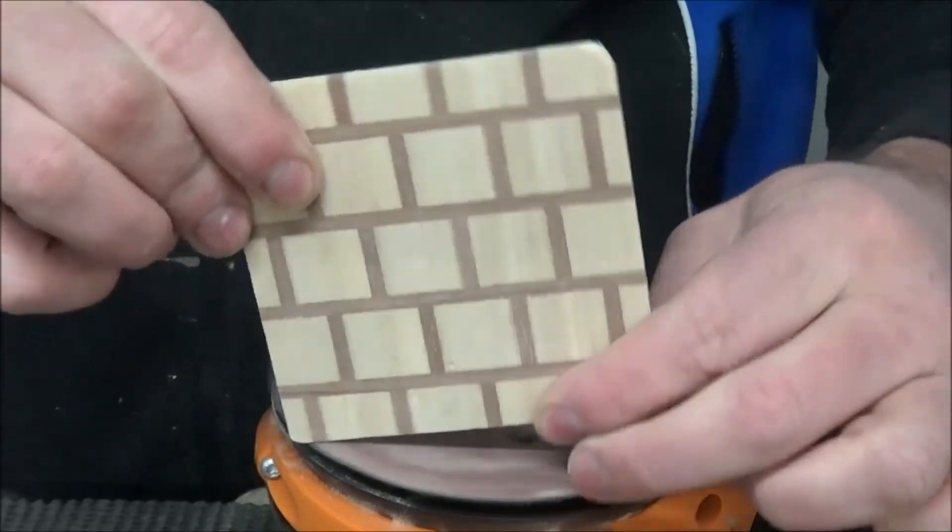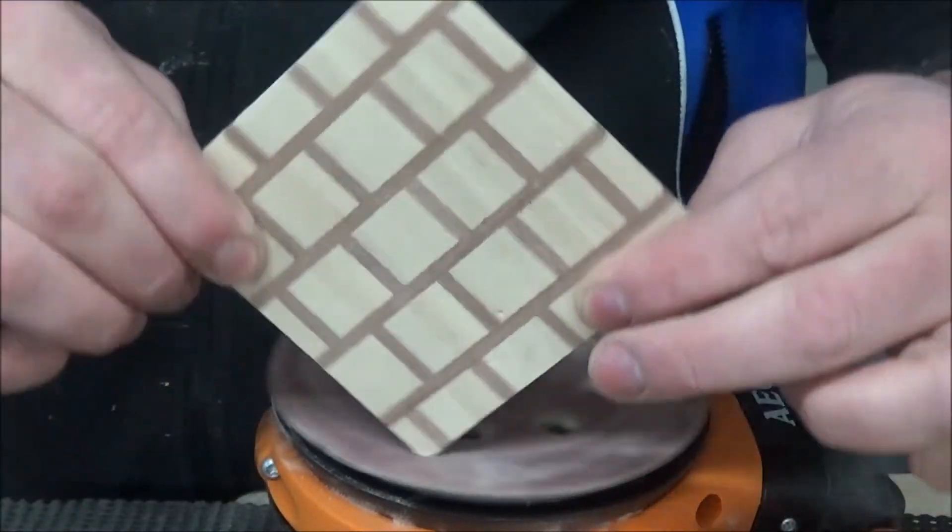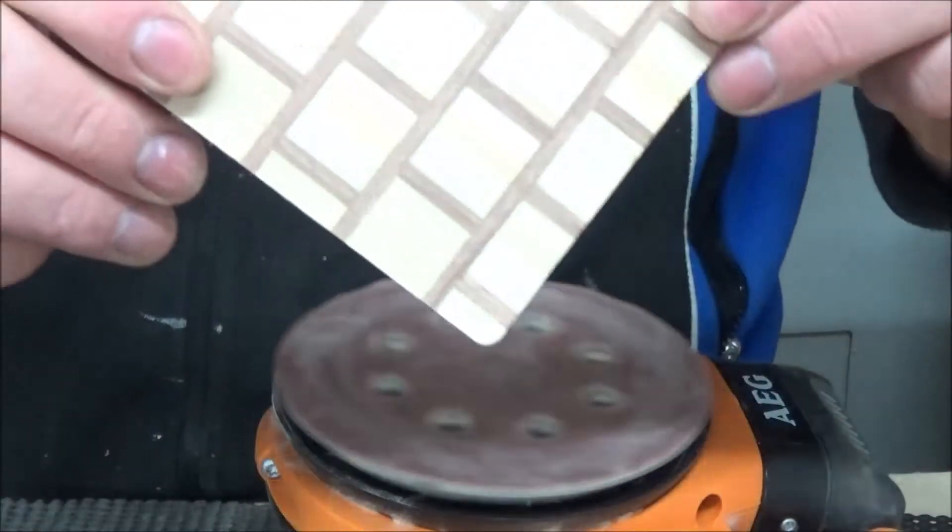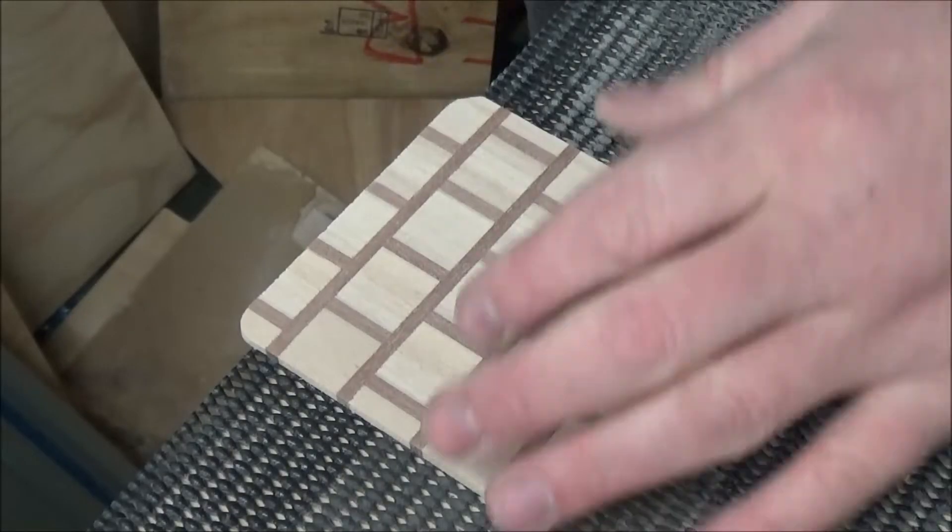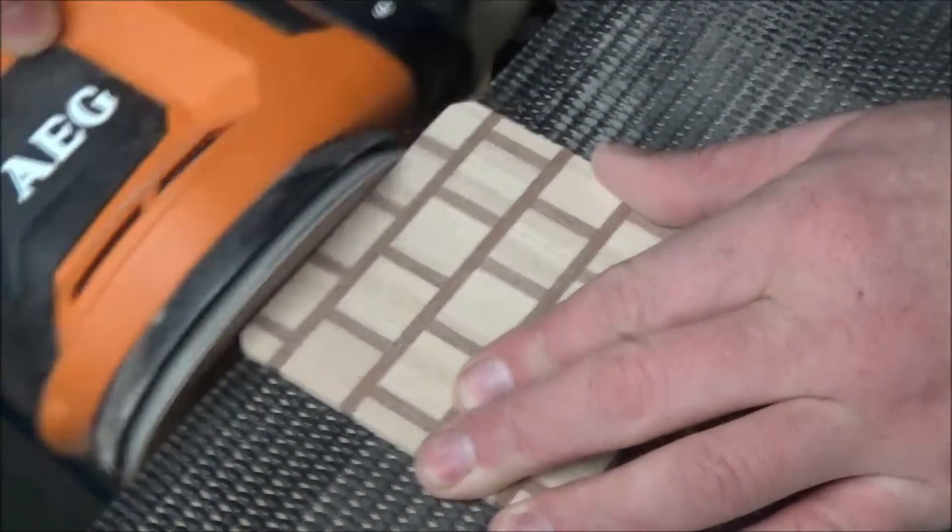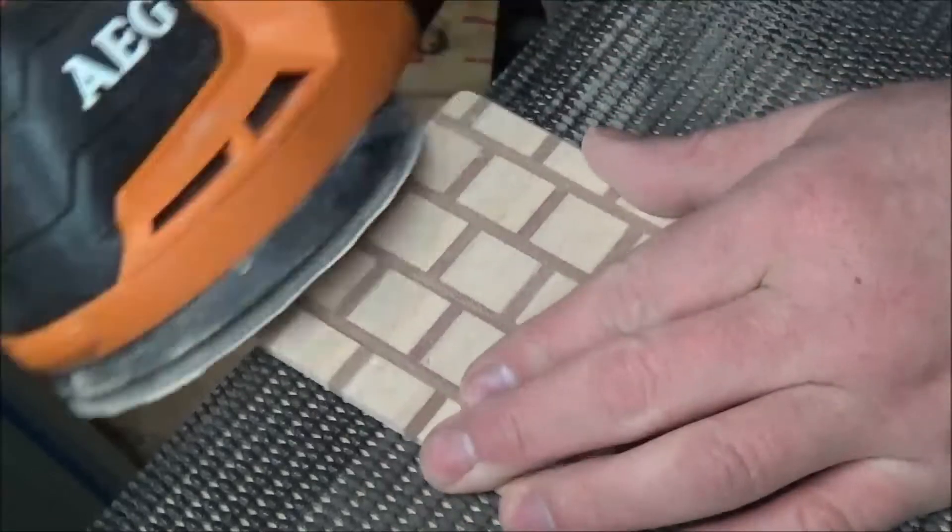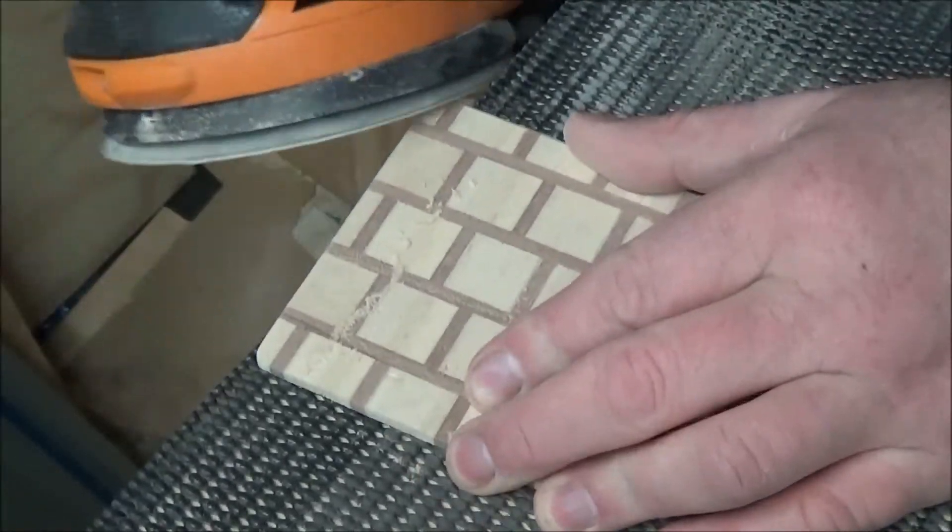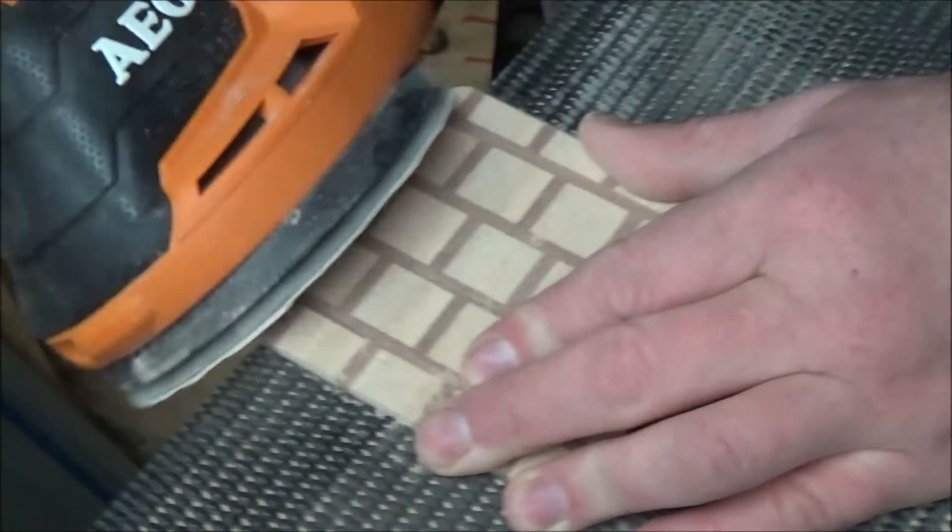I then rounded the corners over on the sander just to give it that extra bit of detail. I was going to use my block plane to chamfer the corners but I was concerned I might get some chip out, so instead I just sanded them over and rounded them.